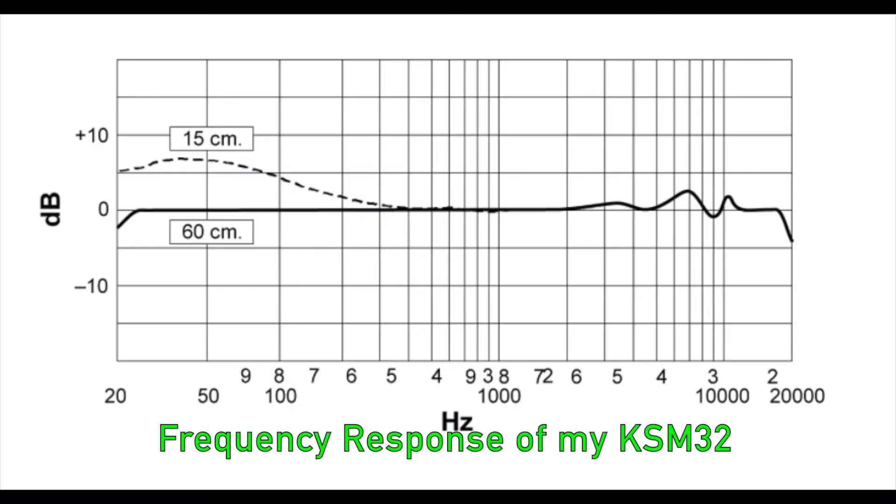The preamp on an interface or mixer has one essential job, and that's to boost the signal to a nominal level for processing. Microphones have a very low output, anywhere between minus 30 to minus 70 dB, so that signal needs to be increased in order to be usable. This is a full spectrum boost from 20 Hz to 20,000 Hz, and some preamps offer a flat neutral boost while other preamps may add some character to the sound, but the job is essentially the same.